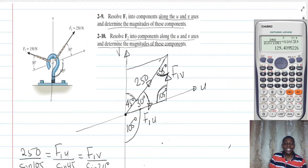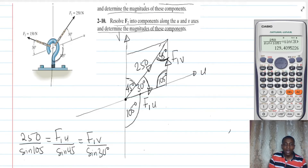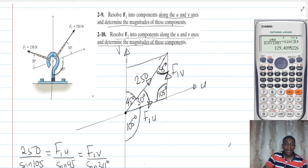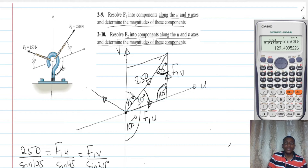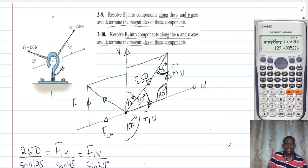You are going to see something interesting — I'll let you see it for yourself. So let's resolve F2 using the same approach. F2 is in this direction. To resolve it, we draw a parallelogram to contain the force, and the sides of the parallelogram will be F2 along the u axis and F2 along the v axis.